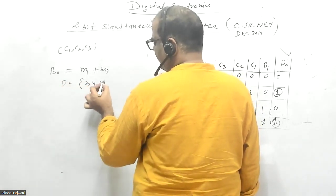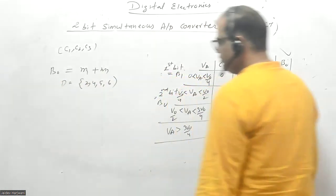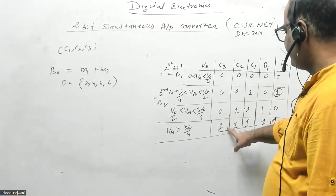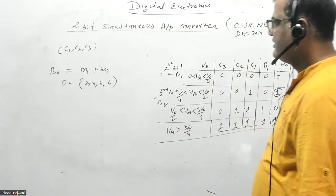The don't care conditions are: you have 2 as don't care, then 4, then 5, and 6. So you have 0, 1, 3, and 7 defined. 2, 4, 5, and 6 are don't care conditions.